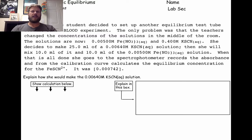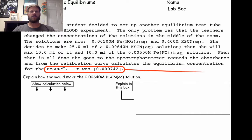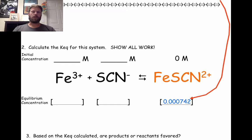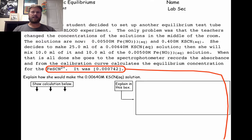Then she's going to take that to the spectrophotometer, measure the absorbance, and convert it to a concentration of the colored product. She gets 0.000742 molar for the concentration of the product at equilibrium. So we know that value in our ICE table, and we're going to use M1V1 calculations to help us fill out the rest of this ICE table.